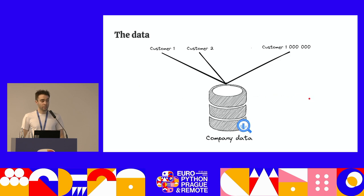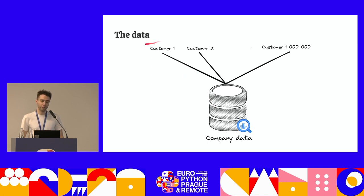The data looked like this. The data was stored in BigQuery, and there was a huge pile of data which was clustered by customers — so you would have a lot of data about customer 1, a lot of data about customer 2 — and the company had a lot of customers.